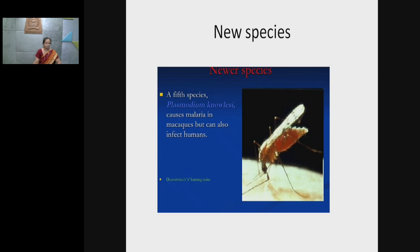There is now a fifth species: Plasmodium knowlesi, which was recently identified. It causes malaria in macaques but can also infect humans.